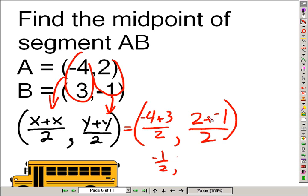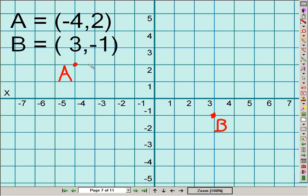Simplify this, negative 1 divided by 2. Simplify this, positive 1 divided by 2. Is this a reasonable answer? Looking at the graph, negative 1 half, positive 1 half. That seems like a reasonable answer for the midpoint of these two points.